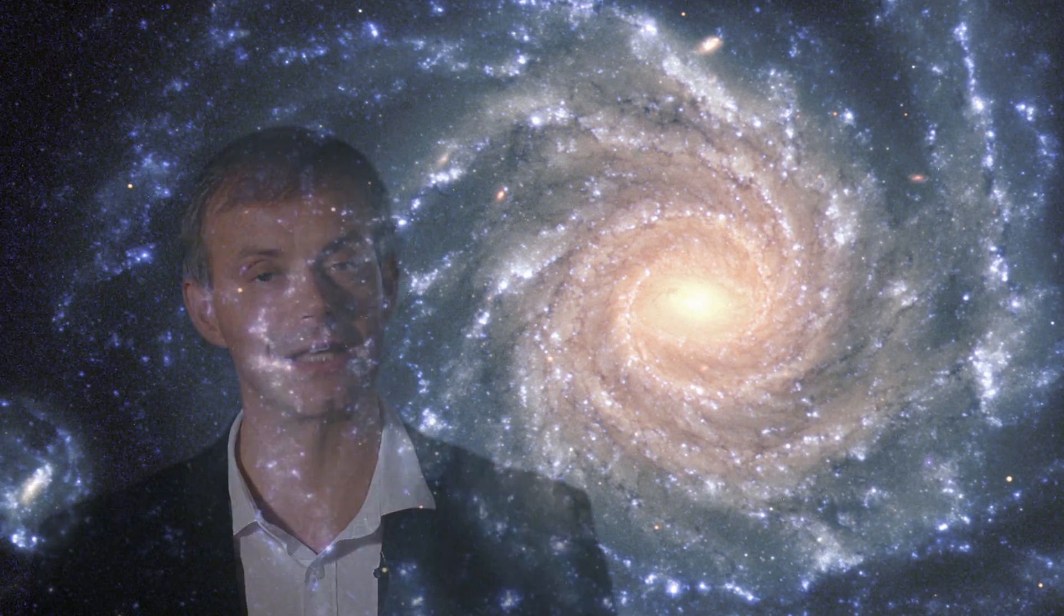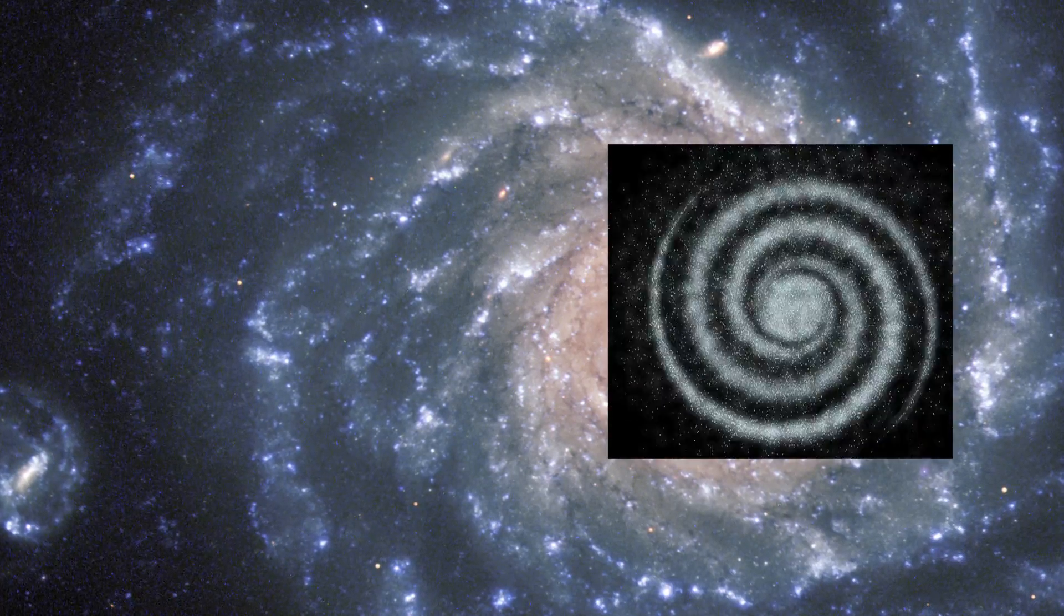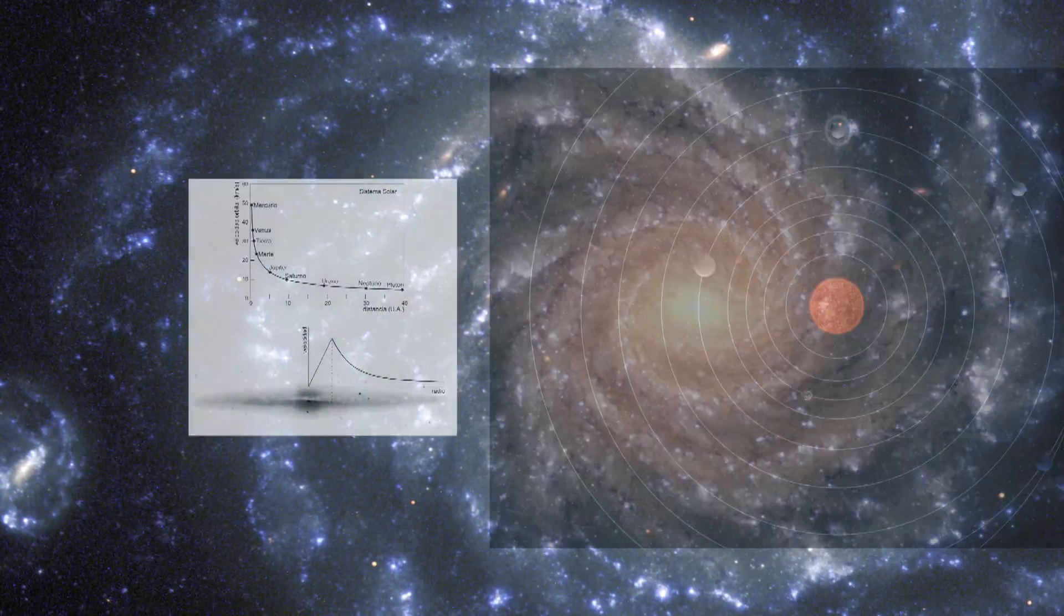As in the solar system, where most of the mass is concentrated in the centre, so too with the spiral galaxies, where more or less the same happens. Most of the bright matter is concentrated in the centre. Therefore, they expected the rotation speed of the stars around the galactic centre to follow the same pattern of the planets rotating around the Sun.